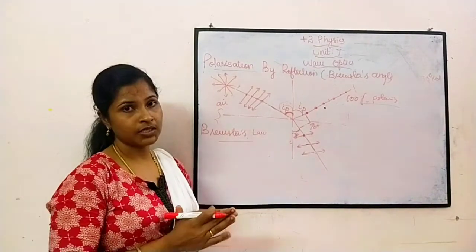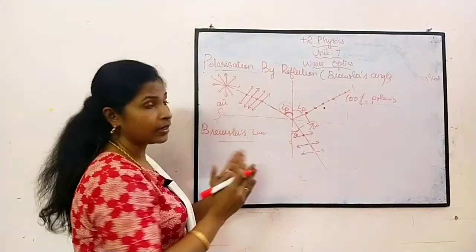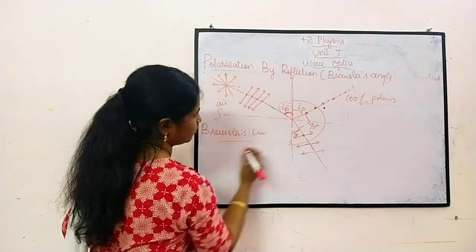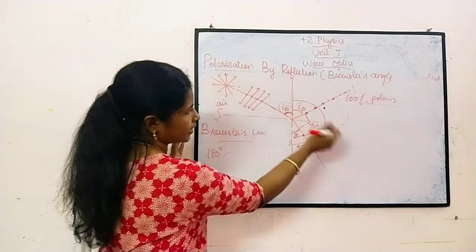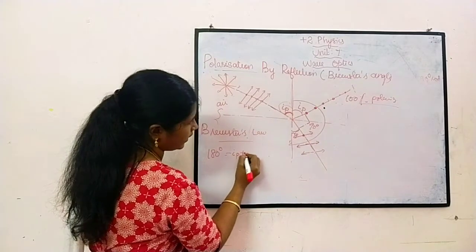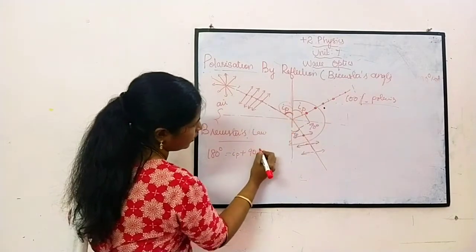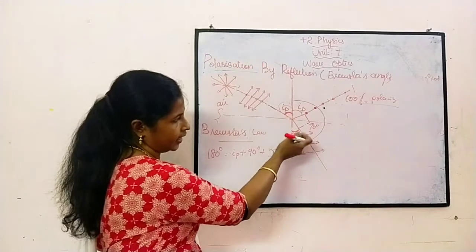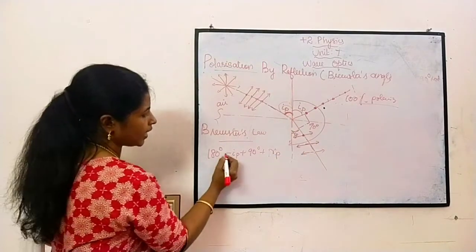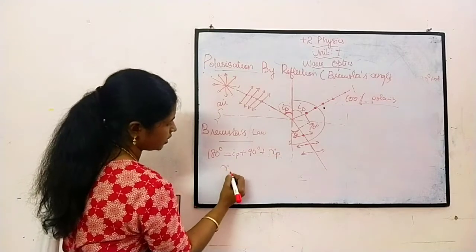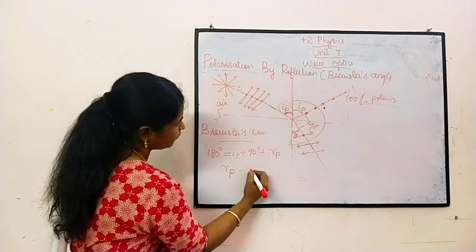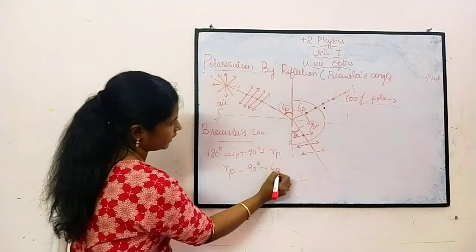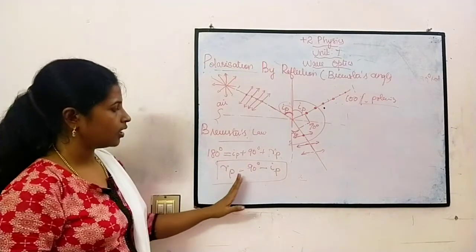What does Brewster's law tell us? We know that from this place to this place the angle is 180 degrees. So: 180 degrees equals IP — the polarizing angle — plus 90 degrees plus the refracted angle RP. So the refracted angle RP equals 90 minus IP. That gives us the angle of refraction as 90 minus IP.